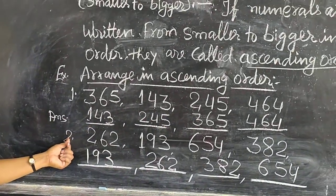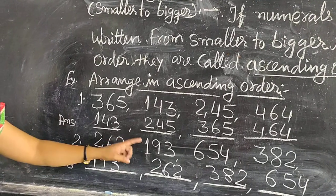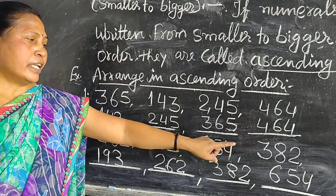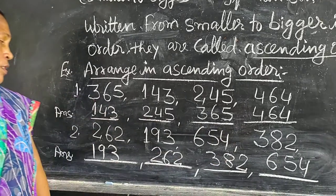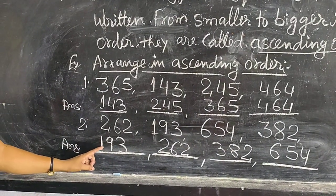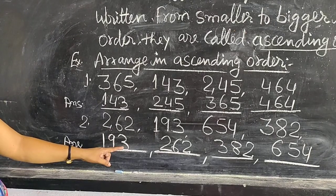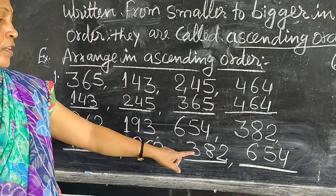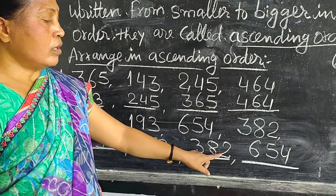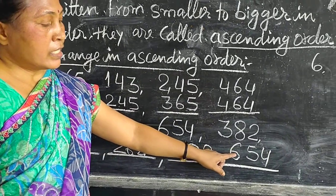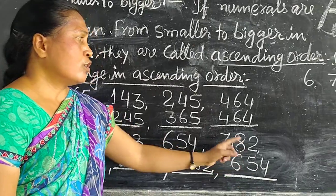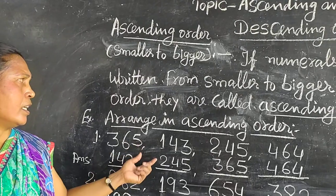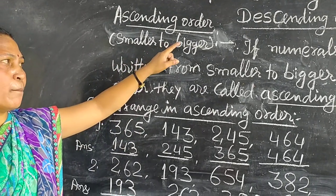Number 2: 262, 193, 654 and 382. The smallest number is 193. After 193 comes 262, after 262 comes 382, then after 654. So this is ascending order. Remember, in ascending order we go from smaller to bigger numbers.